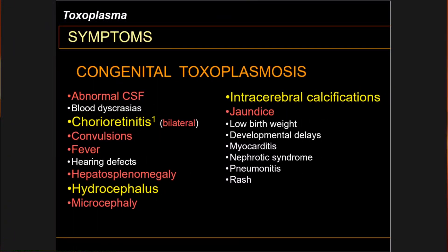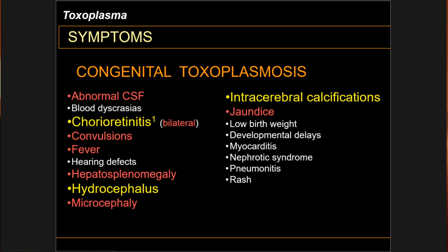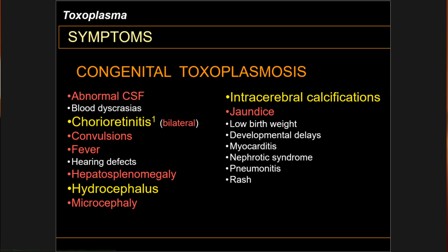Now let's go to congenital toxoplasmosis. Highlighted in yellow is the triad of congenital toxoplasmosis, while highlighted in red are the symptoms associated with severe congenital toxoplasmosis, which also includes the triad. Congenital toxoplasmosis is mostly from transplacental infection. Rates can be as high as 1 in 1,000 live births, but 75% of newborns have subclinical infections. Asymptomatic neonates are prone to reactivation and appearance of symptoms later in life, usually in their second or third decade of life. The most common reactivation manifestations are chorioretinitis, cerebrospinal fluid abnormalities, and impaired psychomotor development.